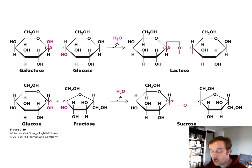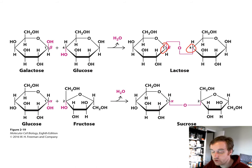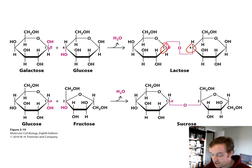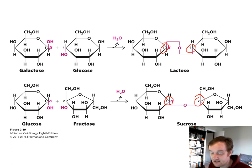Glycosidic linkages form when the carbon of one sugar molecule is linked to a hydroxyl oxygen in another sugar molecule. For example, lactose from milk contains a beta 1,4 glycosidic bond between the number-one carbon of galactose and the number-four carbon of glucose. Sucrose, the table sugar from plants like sugar cane, has an alpha 1,2 bond between the number-one carbon in glucose and the two carbon of fructose. Human digestive enzymes can hydrolyze alpha glycosidic bonds in starch, but not the beta glycosidic bonds in cellulose.